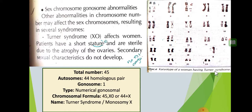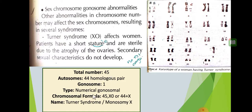The total number of chromosomes in the karyotype of a woman with Turner syndrome is 45. The autosomes are 44, arranged in homologous pairs. The gonosome: there is only one gonosome — one X chromosome. The type of this disease is numerical gonosomal, meaning it is related to chromosome number. The normal number must be 46, and here we have one less.